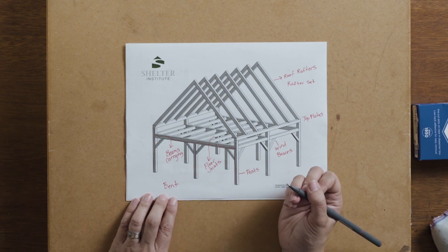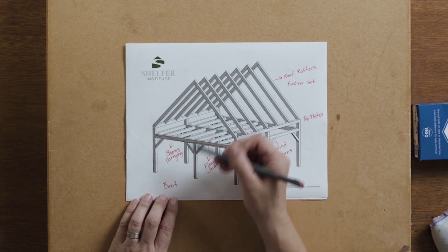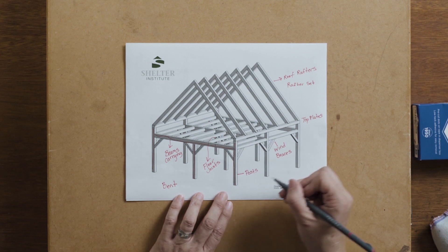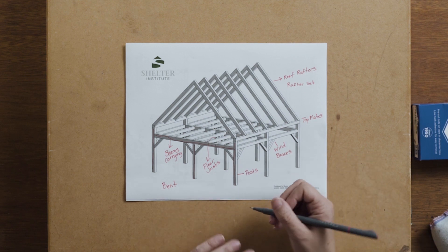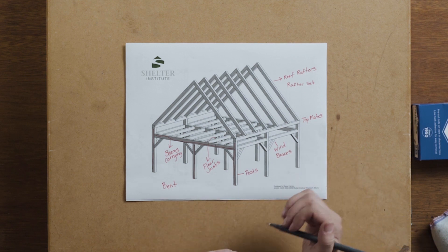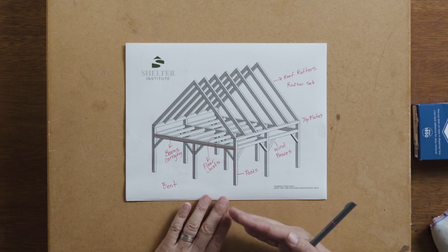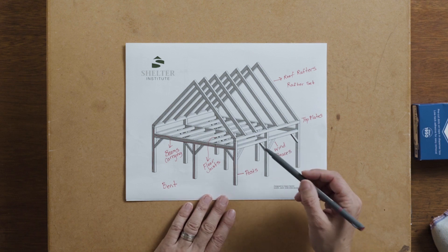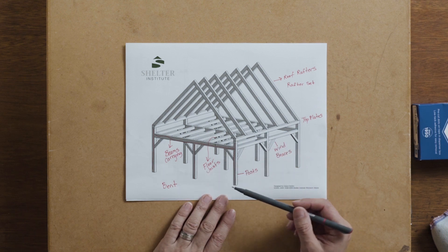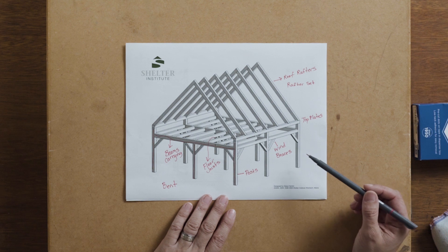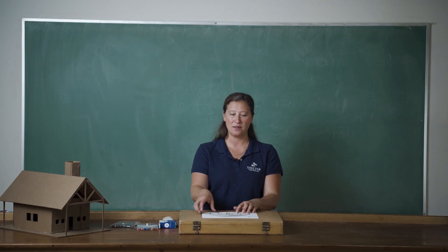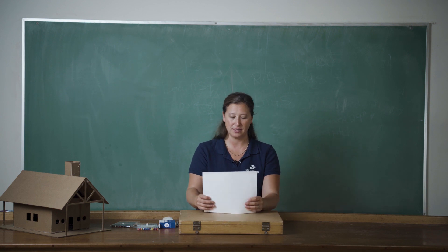Sometimes you might consider making the building longer, going from a 24 by 24 to a 24 by 36 or 24 by 48. In order to make it longer, you would be adding bents, and they are 12 feet on center. So let's go ahead and recap these terms that we described.